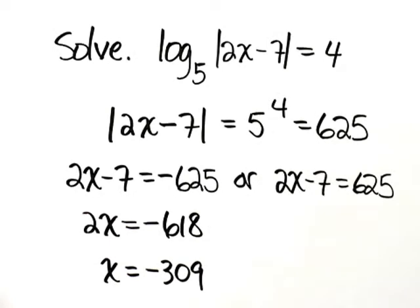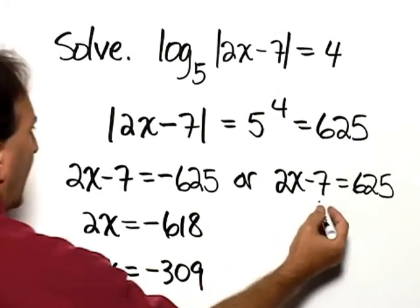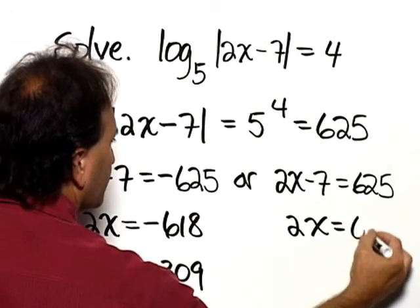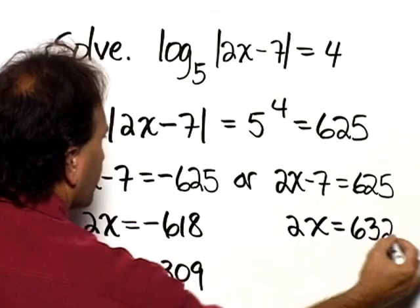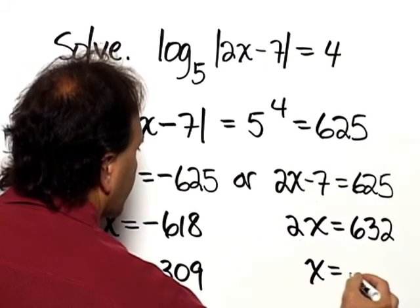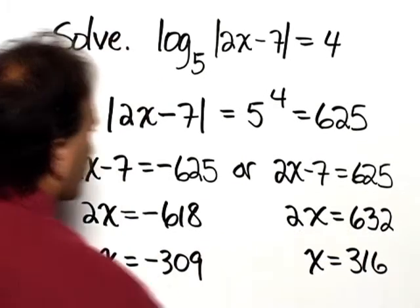Let's solve the other linear equation. Adding 7 to both sides, we get 2x is equal to 632. Dividing both sides by 2, we have x is equal to 316.